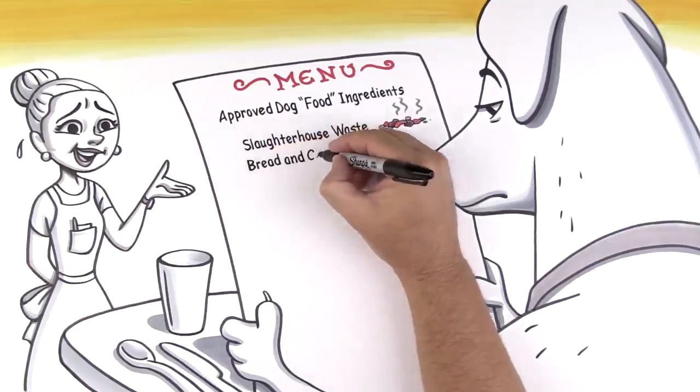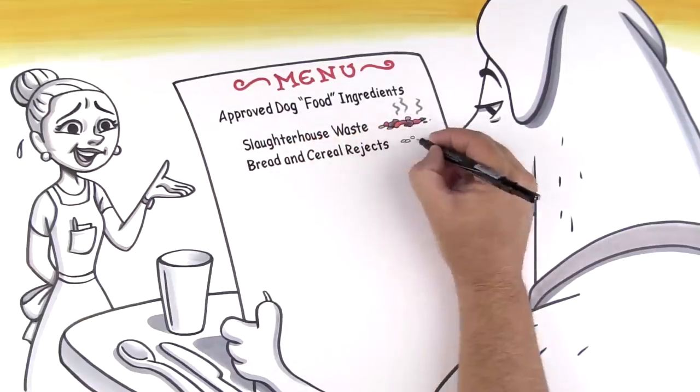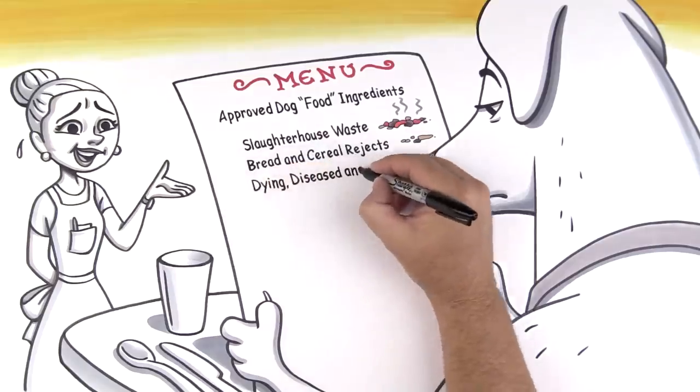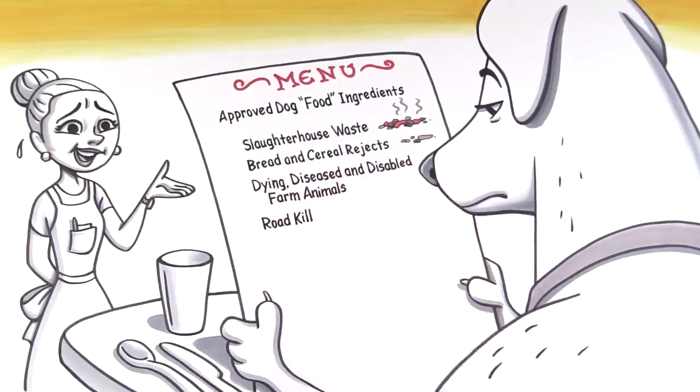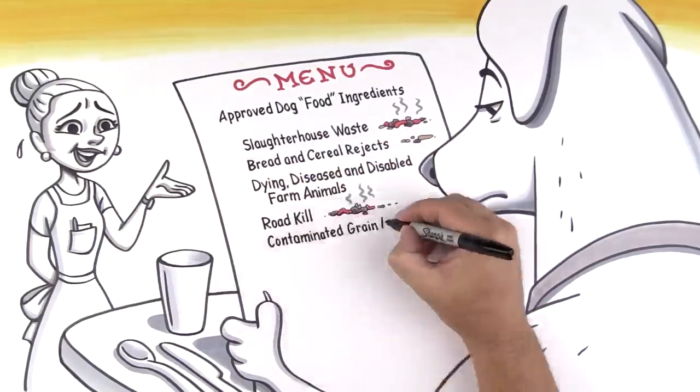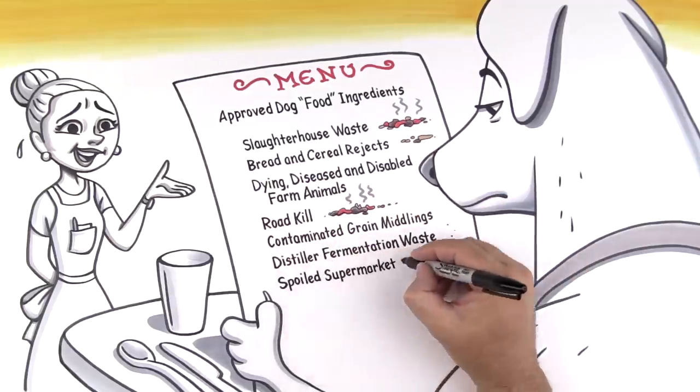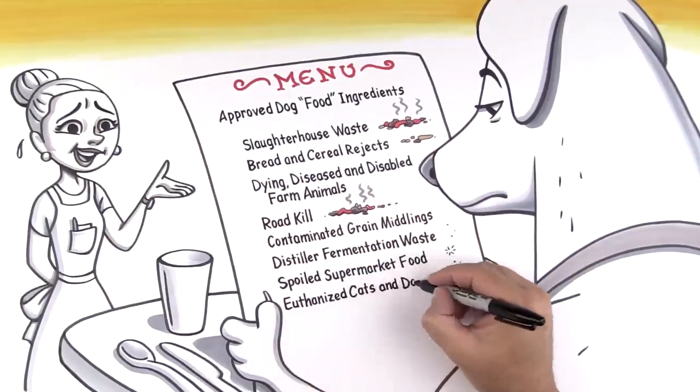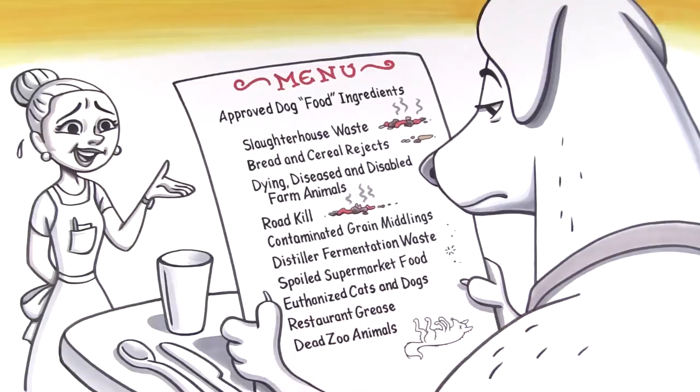Bread and cereal rejects like cobs, stalks, and mill sweepings. Dying, diseased, and disabled farm animals. Roadkill. Contaminated grains, spoiled supermarket food, euthanized cats and dogs, restaurant grease, and dead zoo animals.